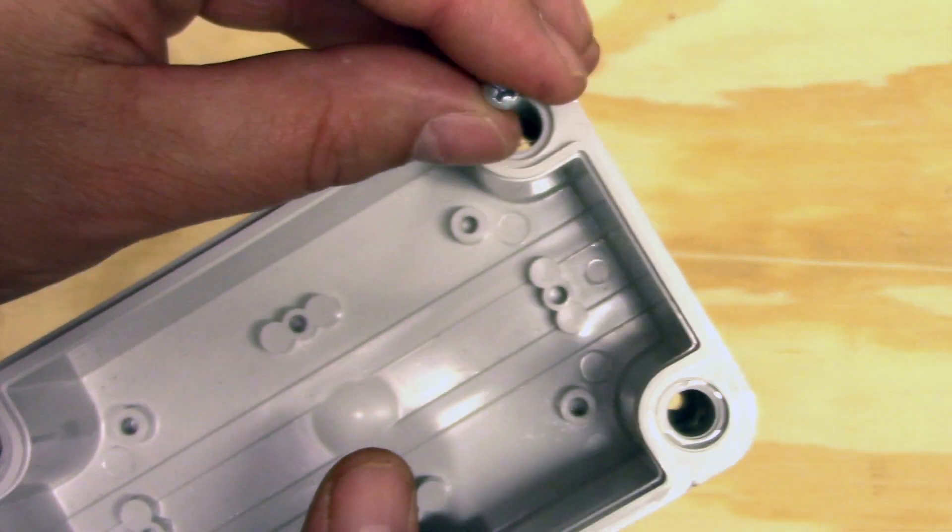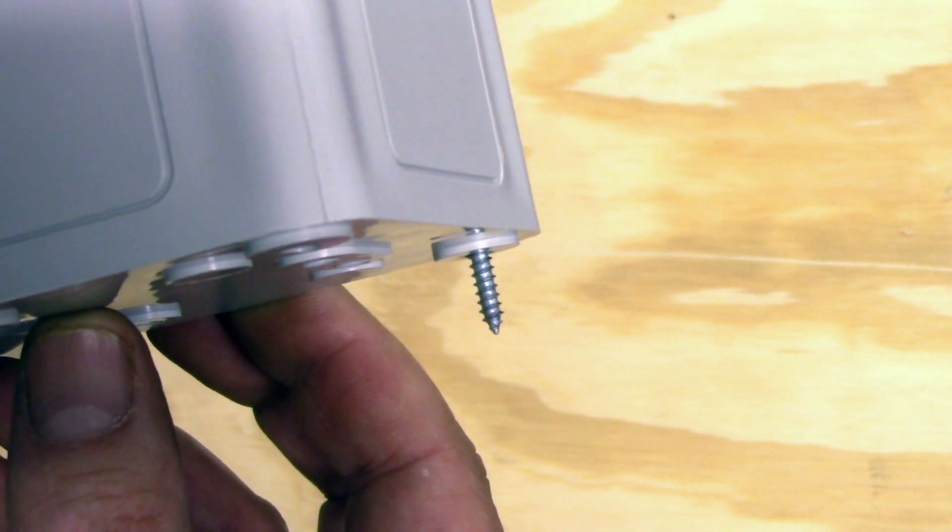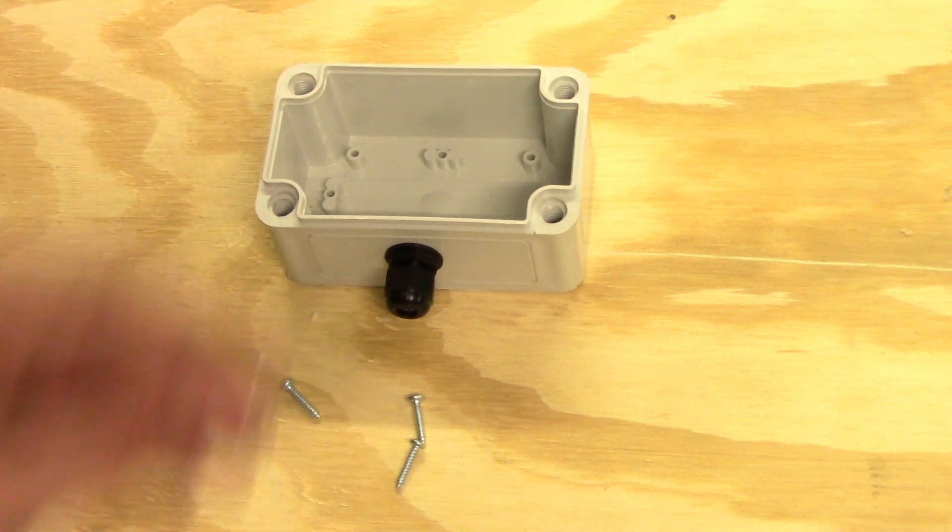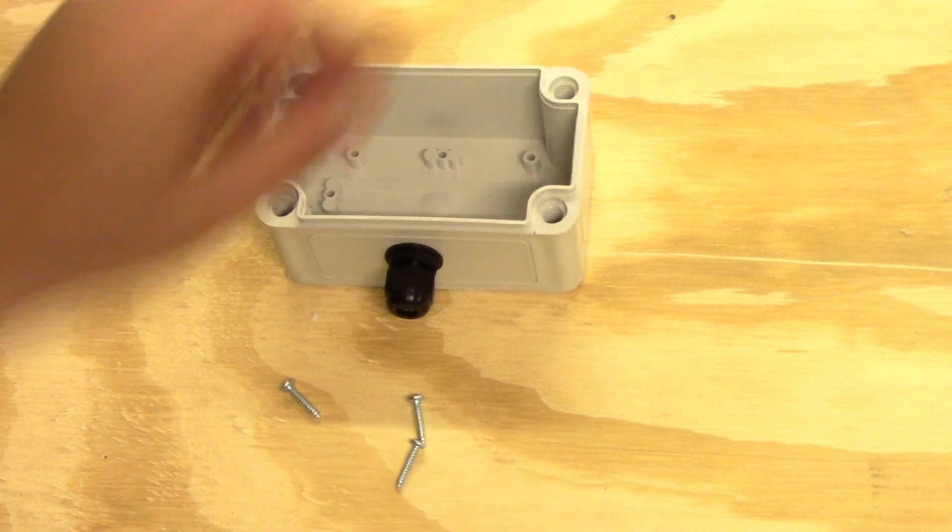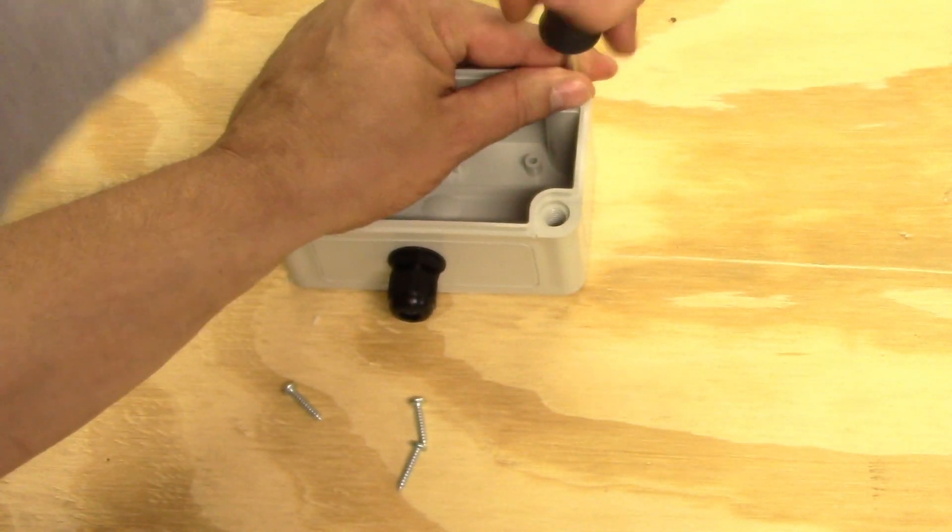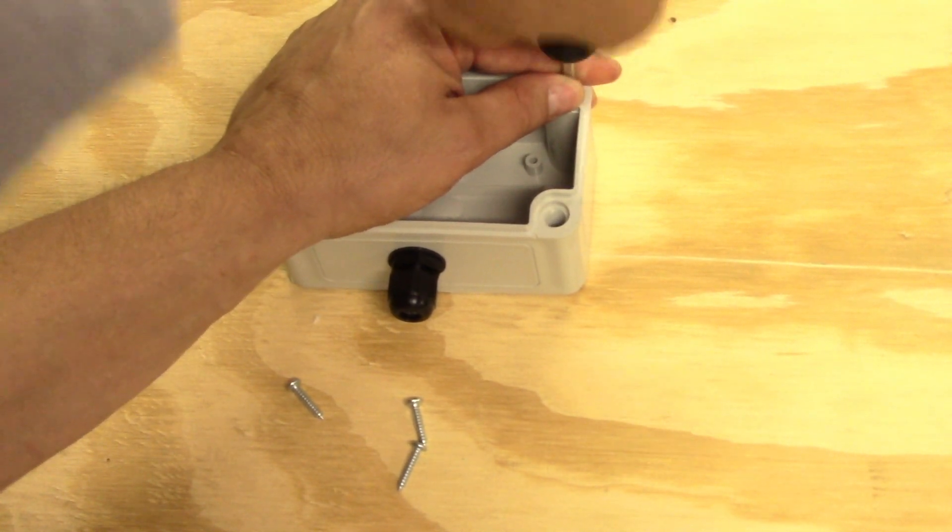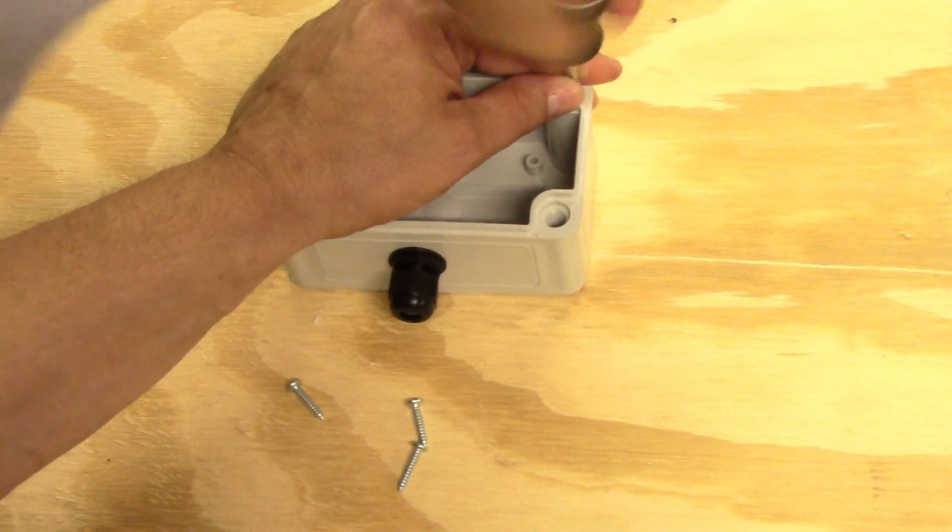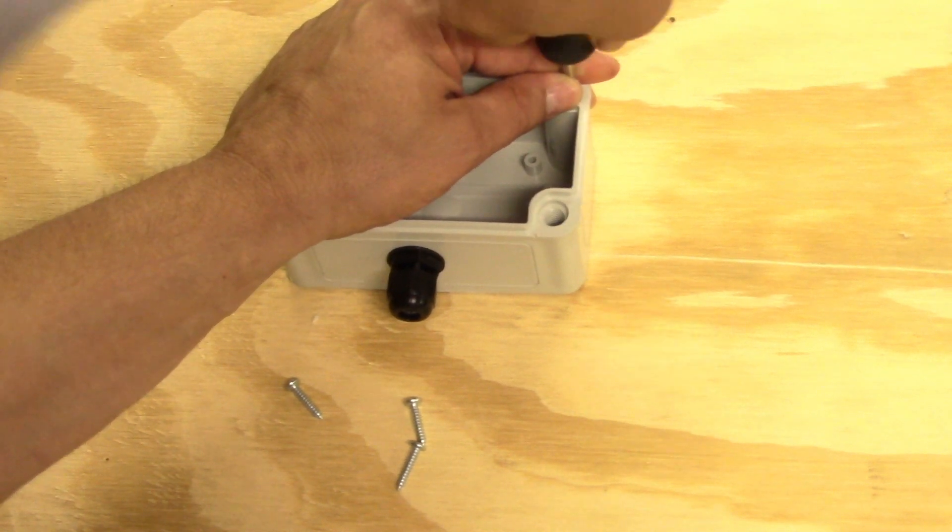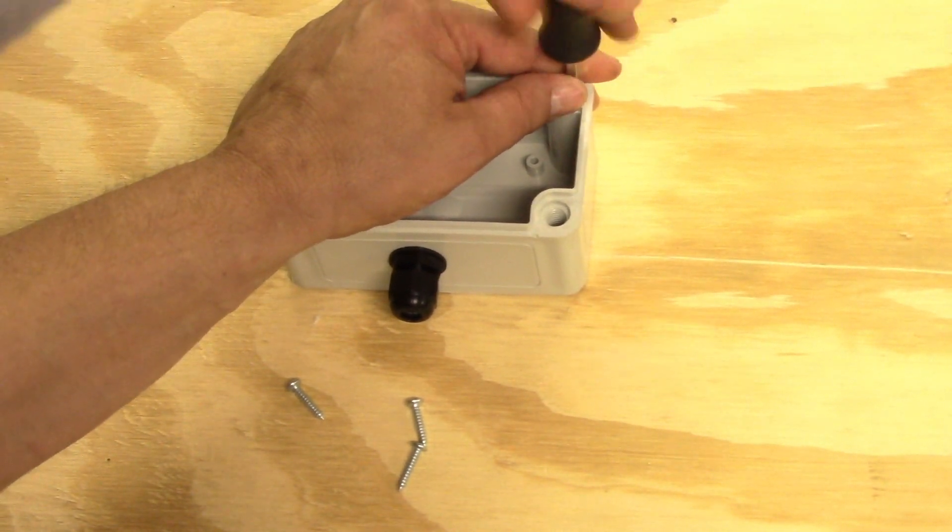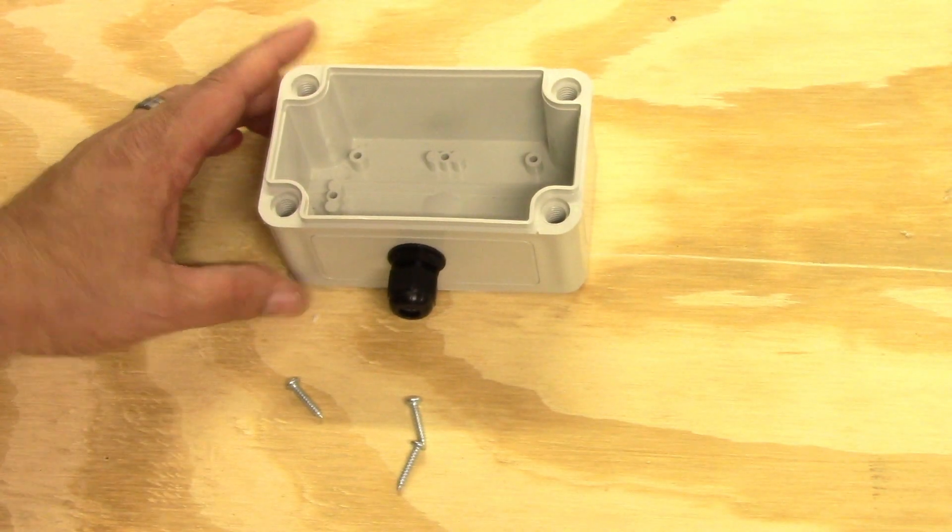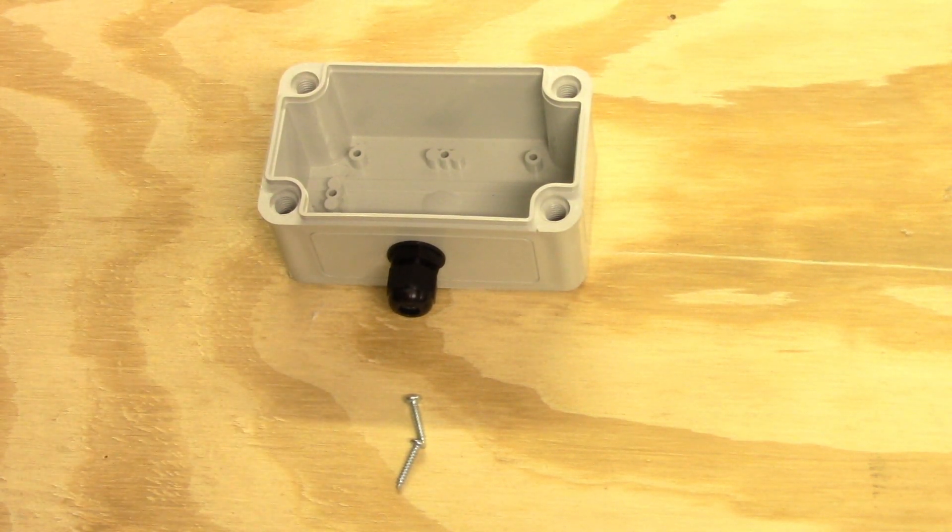If I drop one in here you'll see it comes out the back side there about a half inch. So I'm going to position my box where I want it. Drop the screw in and simply tighten that down into the wood. There you go. Complete that with the rest.